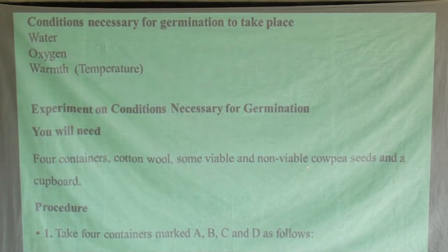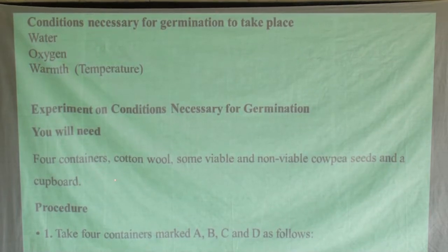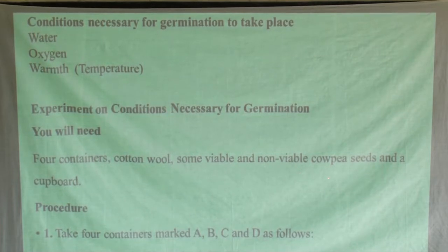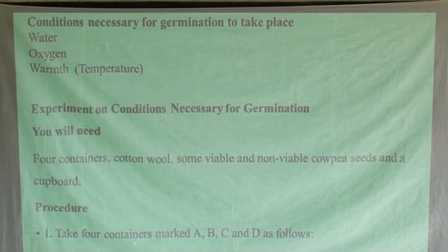You also need a cardboard for the setup. We are going to take our four containers and mark them A, B, C, and D. Container A will have dry cotton wool, and containers B, C, and D will have moist cotton wool — meaning having moisture, which is like water.